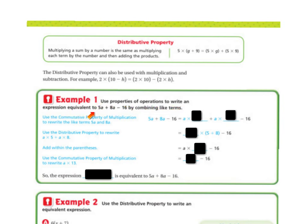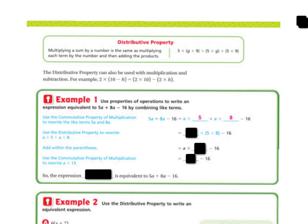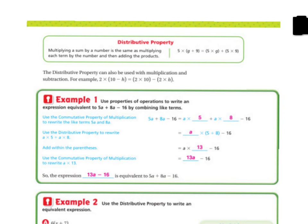Example 1: use the properties of operation to write an expression equivalent to 5a plus 8a minus 16 by combining like terms. Using the commutative property of multiplication, we rewrite 5a plus 8a as a times 5 plus a times 8 minus 16. Then we get a times (5 plus 8) minus 16. Since 5 plus 8 is 13, the equivalent expression is 13a minus 16.